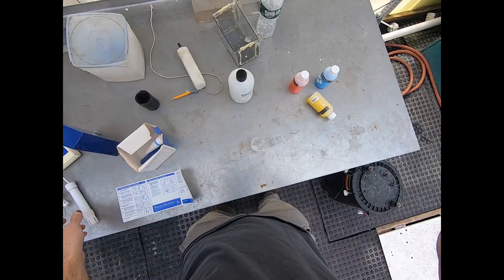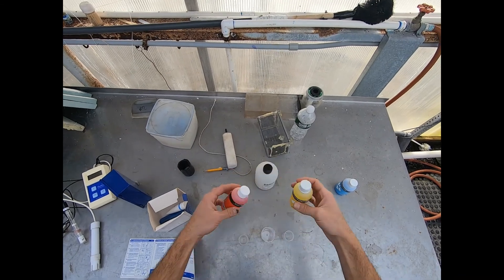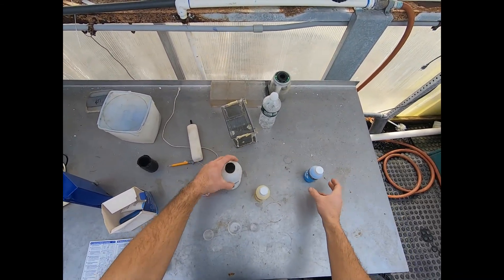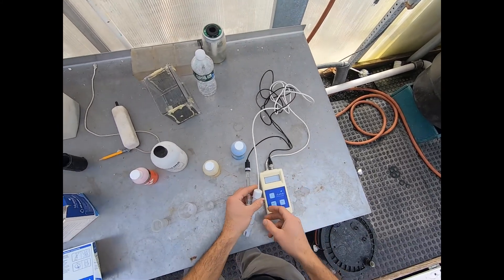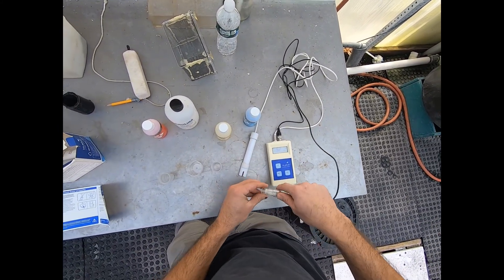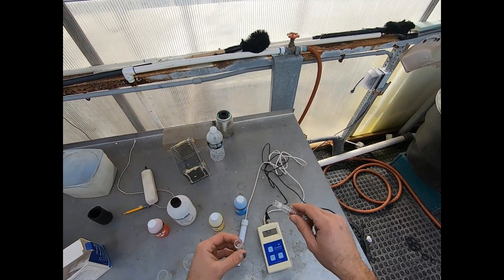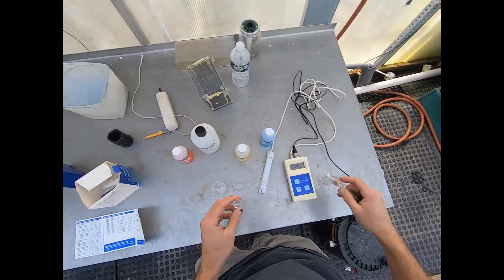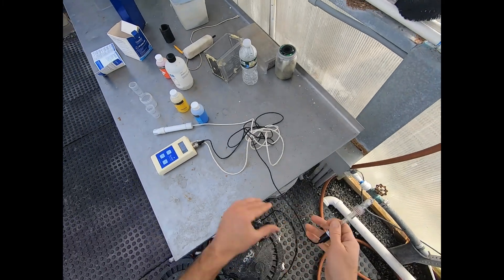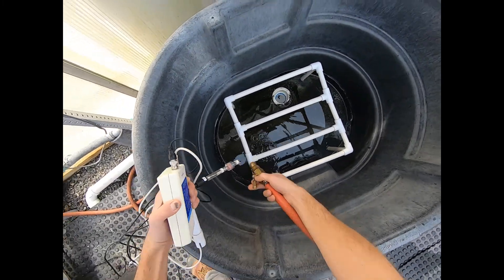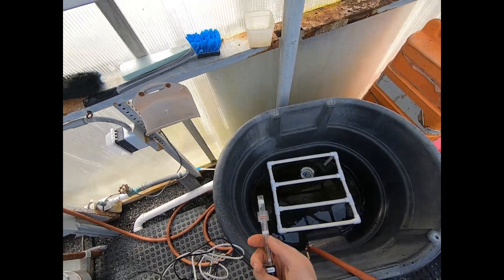All right, so we've got our pH 7 and our pH 4 solution so we can calibrate, and then some electrode storage solution. We can also use pH 10 to calibrate. Here's our meter. We're gonna turn it on to pH. See, it's a little high. The storage solution is a low pH. I'm gonna dump out the storage solution because I'm gonna change it out. I'm gonna rinse off this probe a little bit.